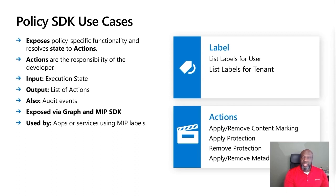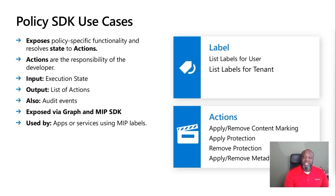An example use case is a line of business app that has a proprietary file type. The developer may want users to pick their own label. In this case, the Policy SDK could be used to display the available labels to a user. Then the user selects the appropriate label, and it would be up to the developer to implement whatever actions are required to label the document.